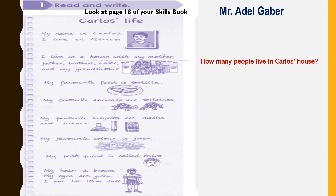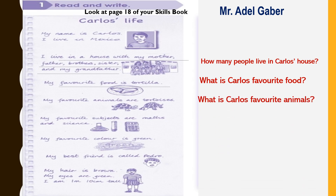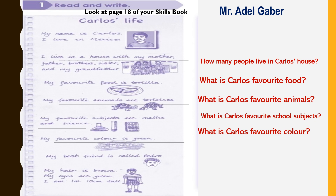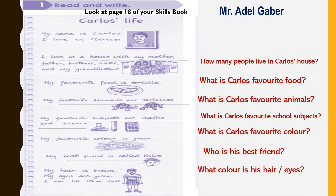Seven people. What is Carlos's favorite food? Tortilla. What is Carlos's favorite animal? Tortoises. What is Carlos's favorite school subjects? Math and science. What is Carlos's favorite color? Green. Who is his best friend? Pedro. What color is his hair and eyes? His hair is brown and his eyes are green. How tall is Carlos? He is 1 meter and 10 centimeters tall.